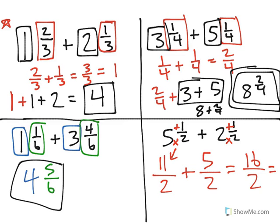And when you simplify 16 divided by 2, you get 8 for your answer. These are different ways to add mixed numbers together. You could choose whichever way works best for you.